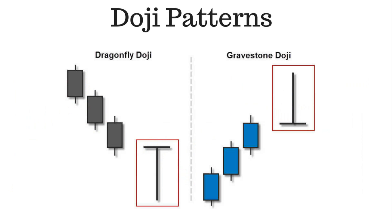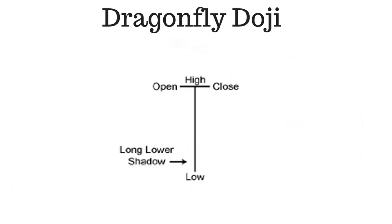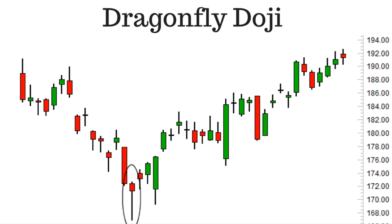There are mainly two types of Doji patterns: Dragonfly Doji and Gravestone Doji. The Dragonfly Doji is typically interpreted as a bullish reversal candlestick pattern that mainly occurs at the bottom of downtrends. It helps traders visually see where support and demand was located after a downtrend, and can signal that the downtrend could be over and that short positions could potentially be covered.